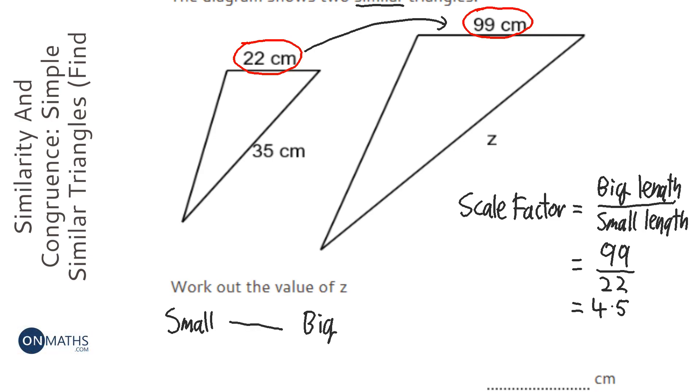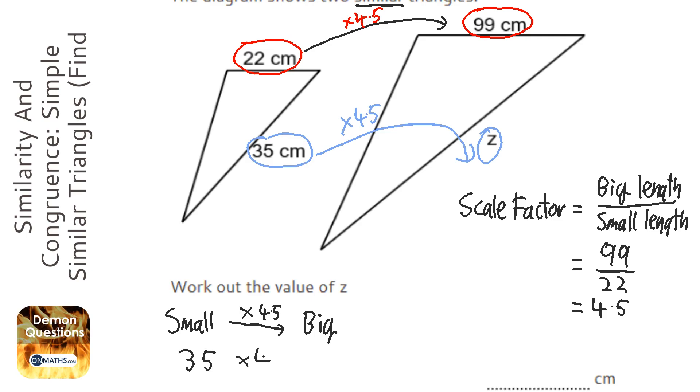Which is our scale factor we've just found out. So we're going to get this 35 and we're going to times it by 4.5, because we times the top one by 4.5. What I'm going to do is just type in 35 times 4.5.